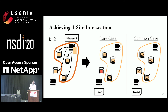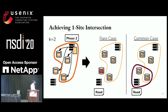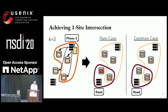We use this observation as follows: we just start and see what happens when we try a one-site intersection. We contact the two nearest sites. In the common case, this is enough — we have k splits and can recover the value.